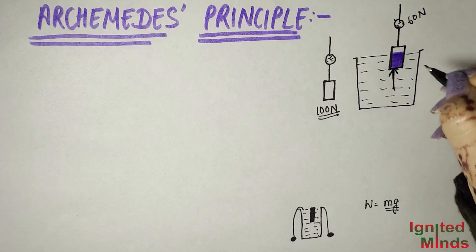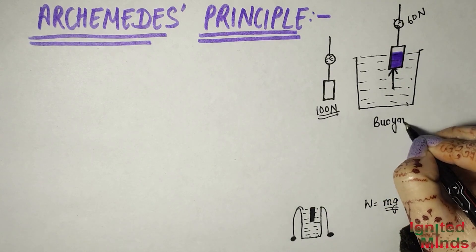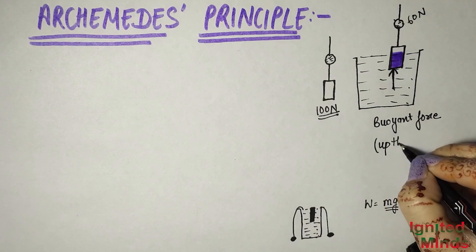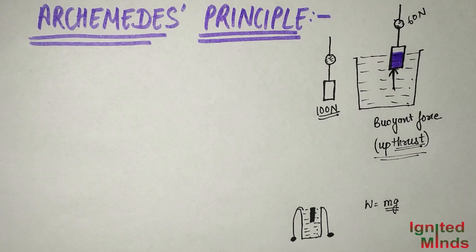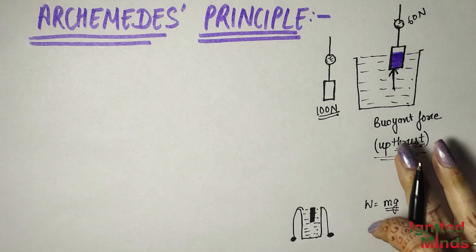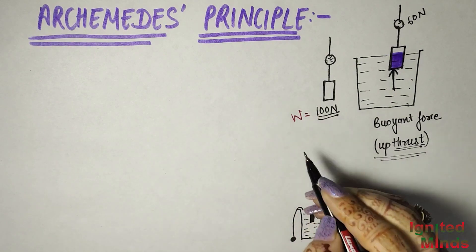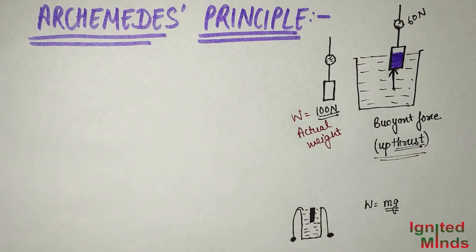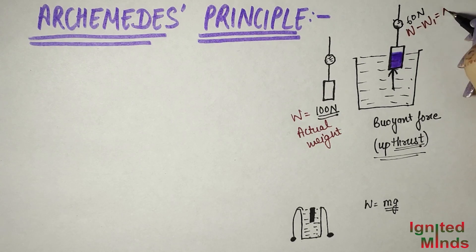This force that is acting on the lower side from the water — we call this force buoyant force, or upthrust. So what we have noticed is: the actual weight W was 100 N. When we put it into the water, the apparent weight became W minus some force, which is delta W = 60 N. That is 100 minus 40 Newtons equals 60 Newtons.